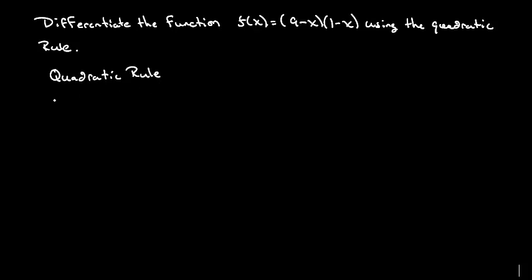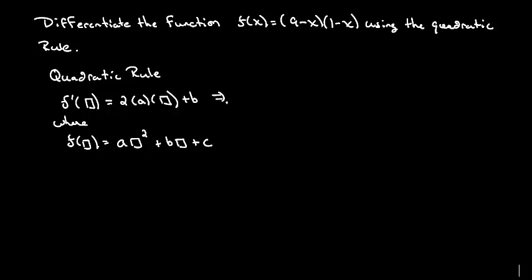The quadratic rule says that if you want f prime at some x value, then that's equal to 2 times a times that x value plus b, where the original function f was equal to a times something squared plus b times that same something plus c. So you would normally in a book see it written like this: f prime of x is equal to 2ax plus b from a function f of x equaling ax squared plus bx plus c.